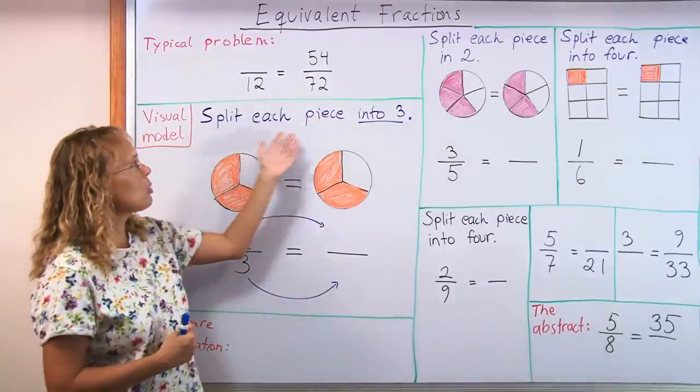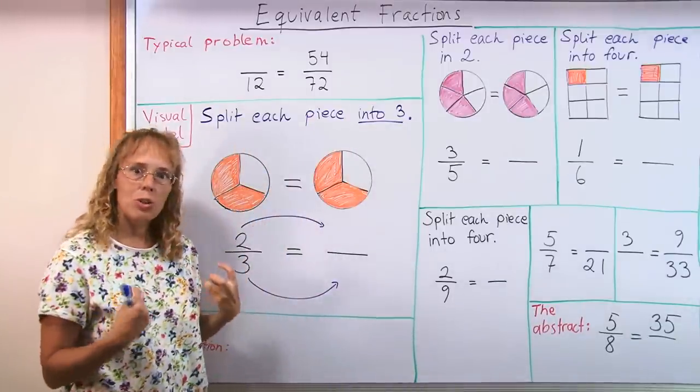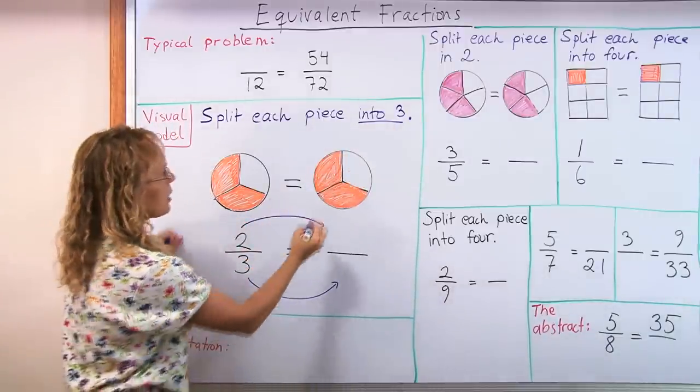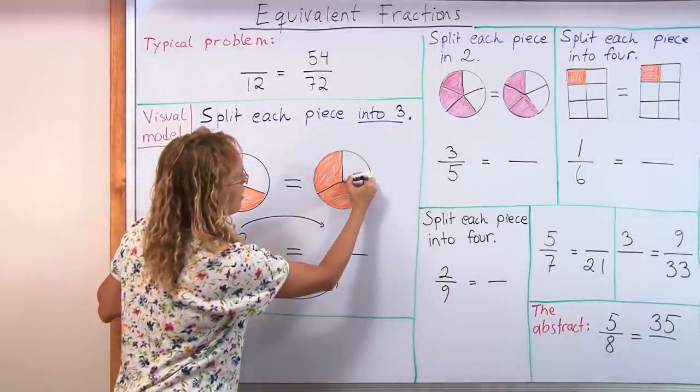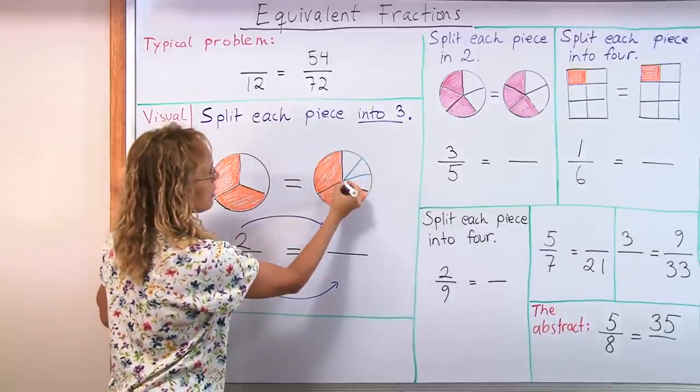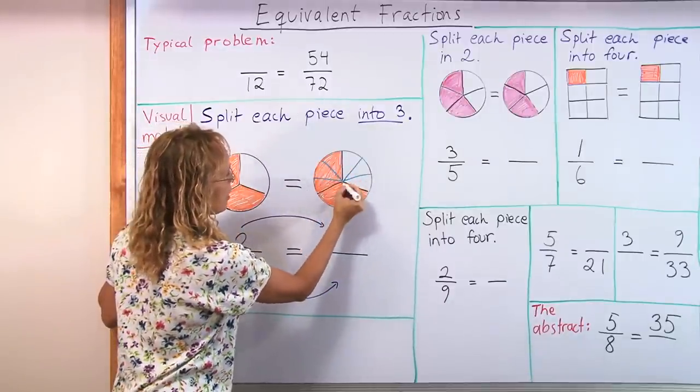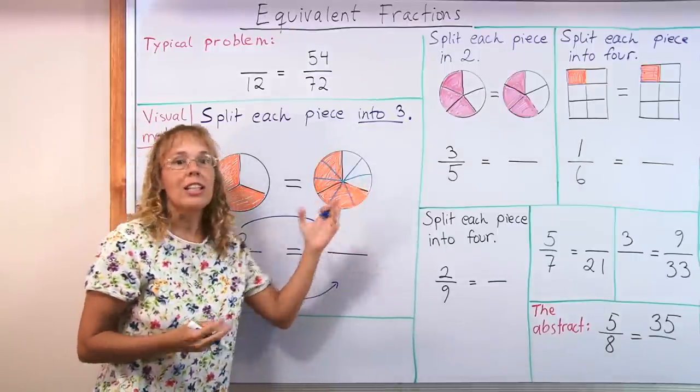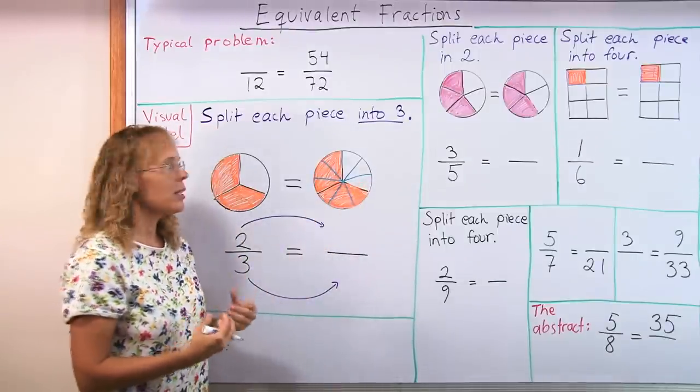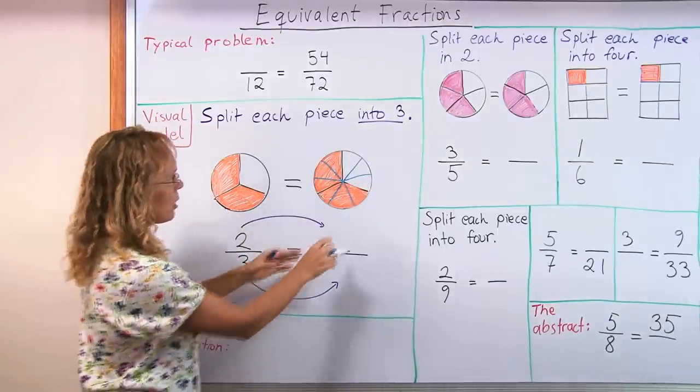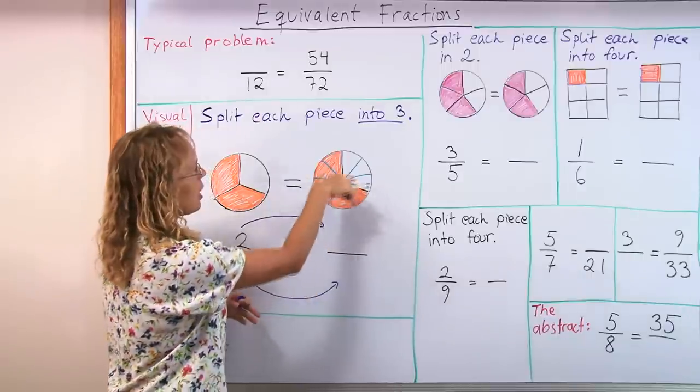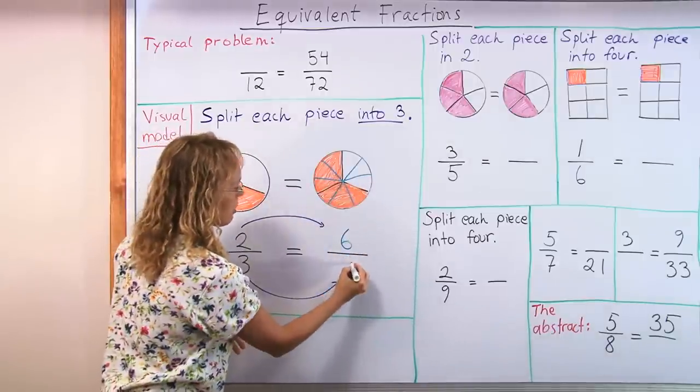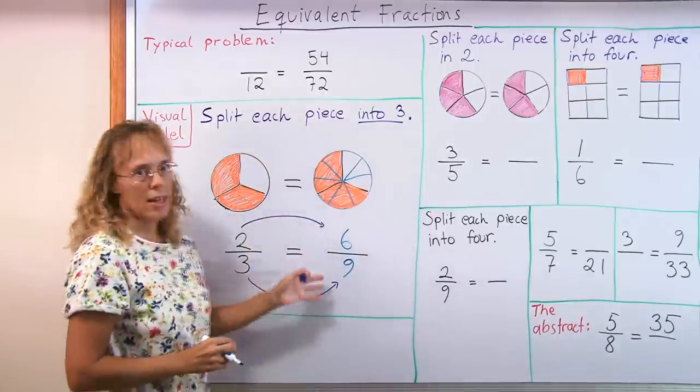What happens is we split each piece into so many new pieces. This time into three new pieces. So I take here, I divide this into three new pieces, and this one, and this one. Each piece, whether it is colored or not, needs divided into three new pieces. And now all we need to do is just count. There's one, two, three, four, five, six. Six colored pieces and nine total, right? So we got 6/9.